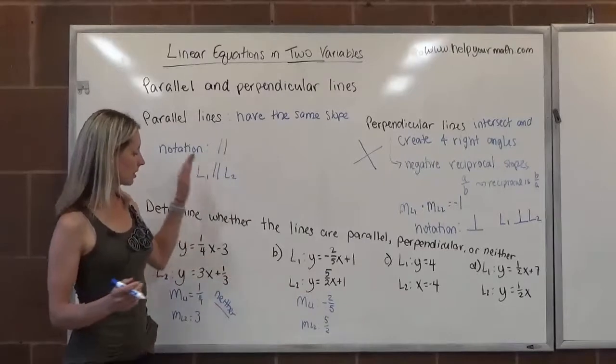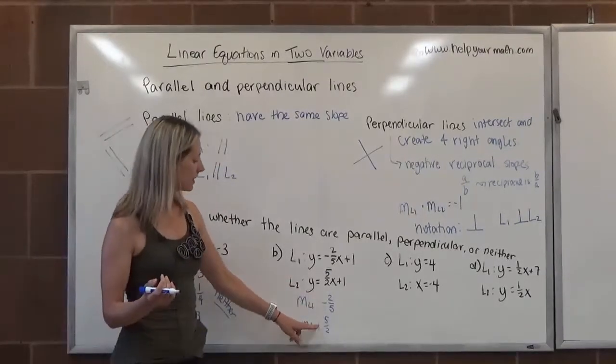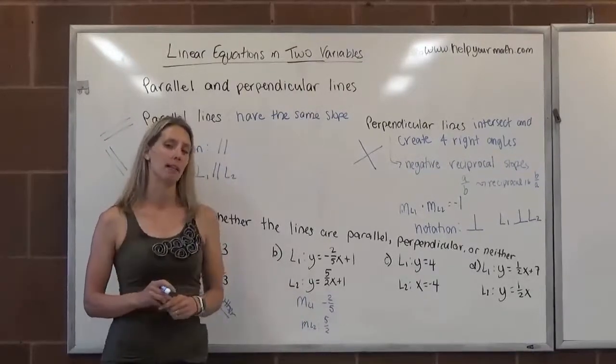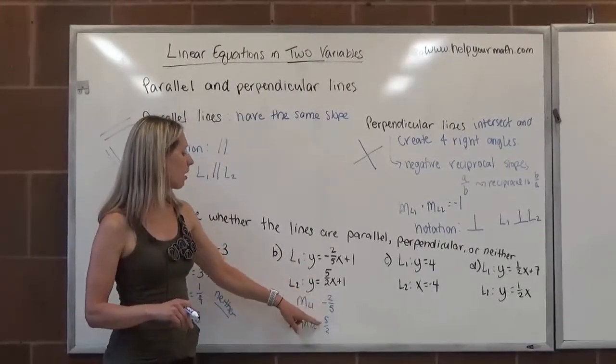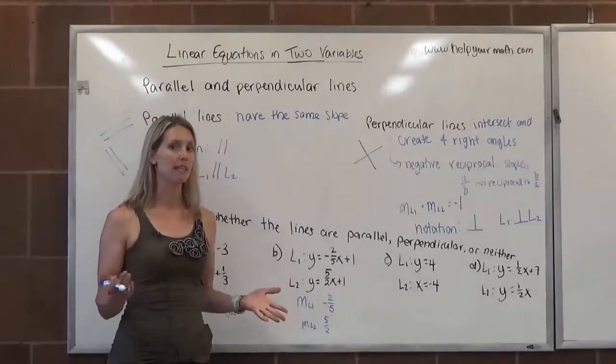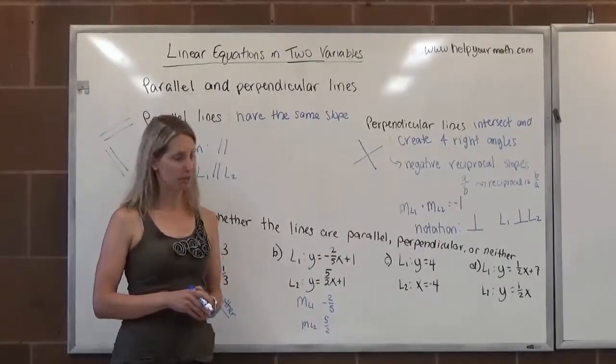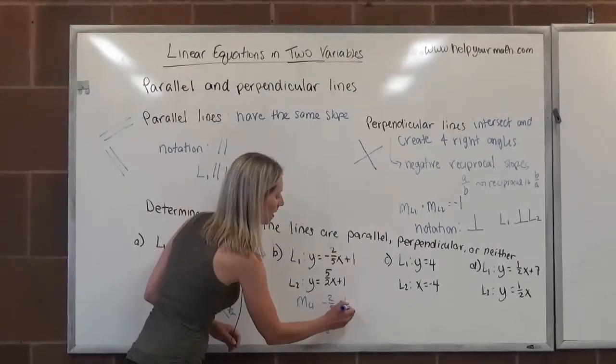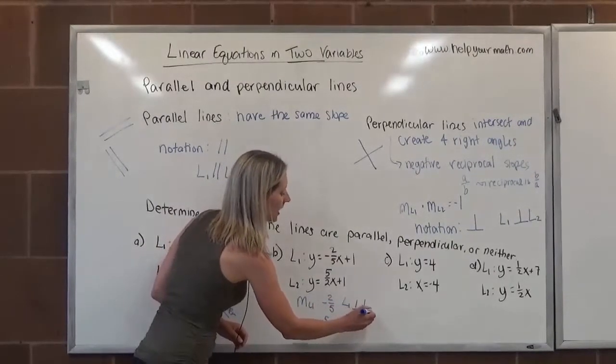So in this case, they're not parallel because they're not the same. They do have opposite signs. L1 has a negative slope and L2 has a positive slope. And then the question is, are they also reciprocals of each other? Is two-fifths the reciprocal of five-halves? And the answer is yes. That makes these lines perpendicular. So we can say L1 is perpendicular to L2.